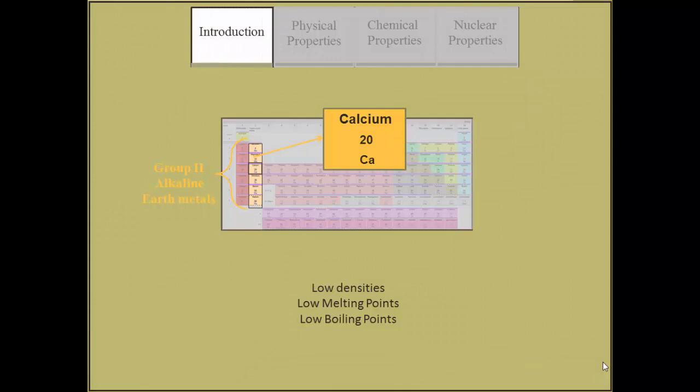It has a plus two oxidation state and high metallic character, as well as low density, melting point and boiling point. Calcium's low melting point causes it to emit a red flame when ignited. It is an insoluble substance that does not decompose upon heating.